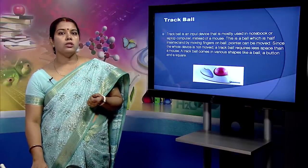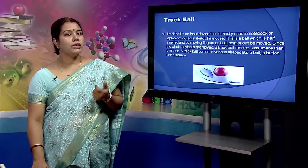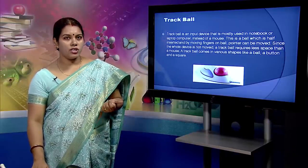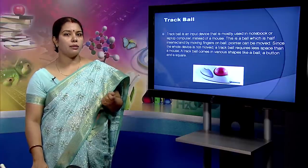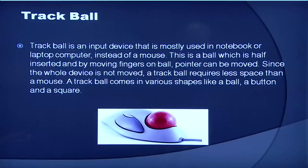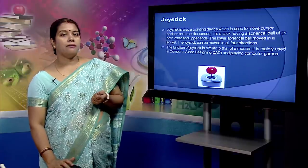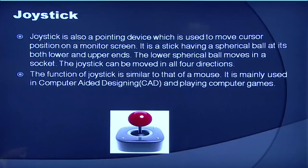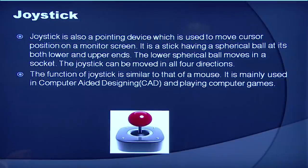The advantage of track balls over a mouse is that the track ball is stationary, so it does not require much space. You can place a track ball on any type of surface including your lap. For these reasons, track balls are popular pointing devices for portable computers. The next we have is a joystick. A joystick is a pointing device used to move cursor position on a monitor screen. It is a stick having a spherical ball at its both lower and upper ends. The joystick can be moved in all four directions and its function is similar to that of a mouse. It is mainly used in computer-aided designing and playing computer games.